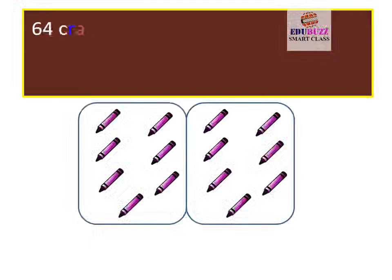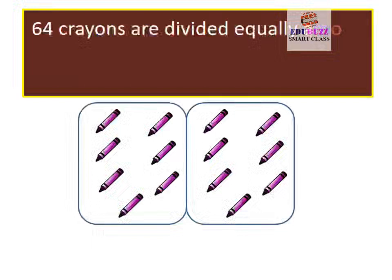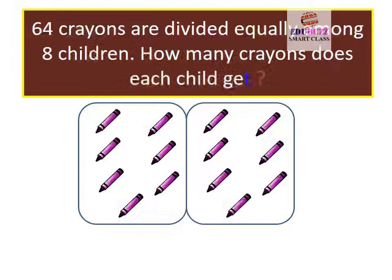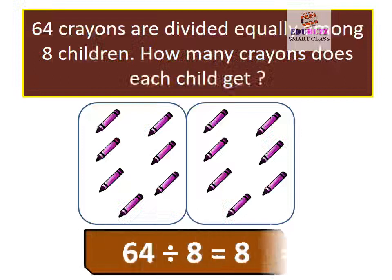64 crayons are divided equally among 8 children. How many crayons does a child get? 64 divided by 8 is equal to 8.